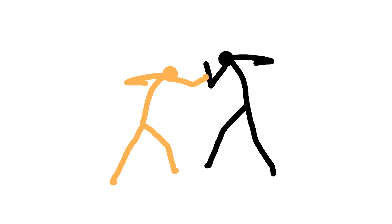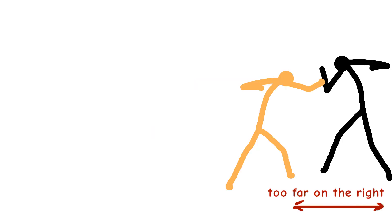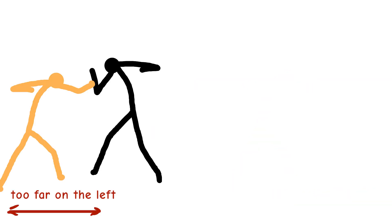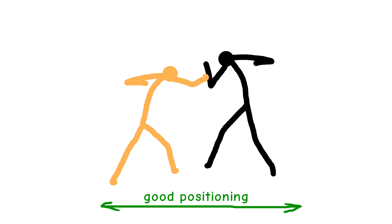Before we start adding the camera movements, I would like to explain what a good camera position looks like. Without the camera position, the stick figures might be too far on the right side or too far on the left side of the picture. With camera movement, we want to move the figures somewhere in the middle of the frame.